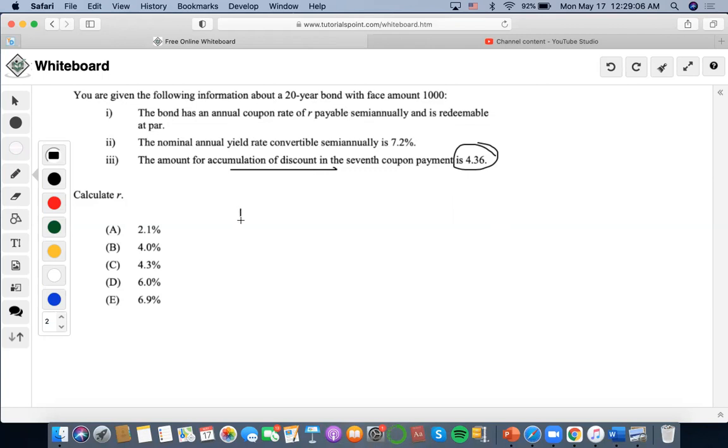So that means that I could take the face amount of 1,000 times annual coupon rate of R semi-annual, A angle 37 at 7.2 divided by 2, which is 3.6 percent, plus 1,000 redeemable at par. Let's get 37, right? Now let's solve this.